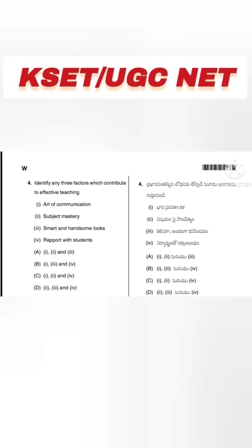Identify any three factors which attribute to effective teaching. The options are: art of communication, subject mastery, smart and handsome looks, and rapport with students. The correct answer identifies three factors: art of communication, subject mastery, and rapport with students — options first, second, and fourth.